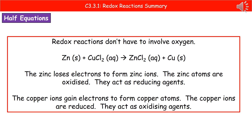The last thing to remember is that not all redox reactions involve oxygen. Some redox reactions have no oxygen involved whatsoever — for example, zinc and copper chloride. In that reaction, zinc loses electrons to become zinc ions, so it is oxidised and acts as a reducing agent. The copper, however, gains electrons to form copper atoms, therefore it is being reduced and acts as an oxidising agent.